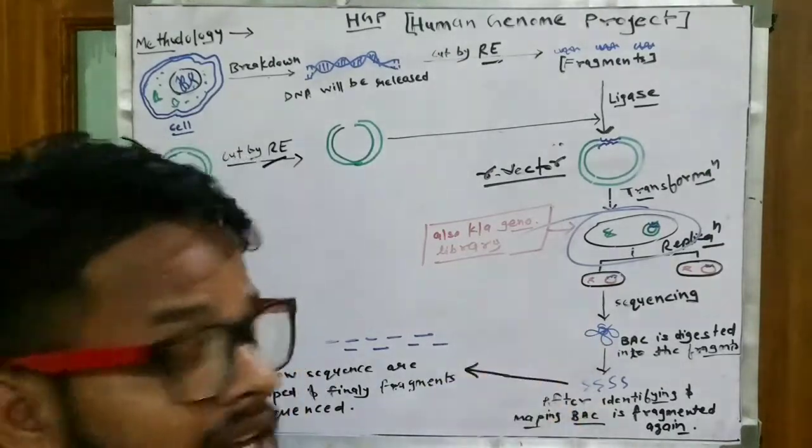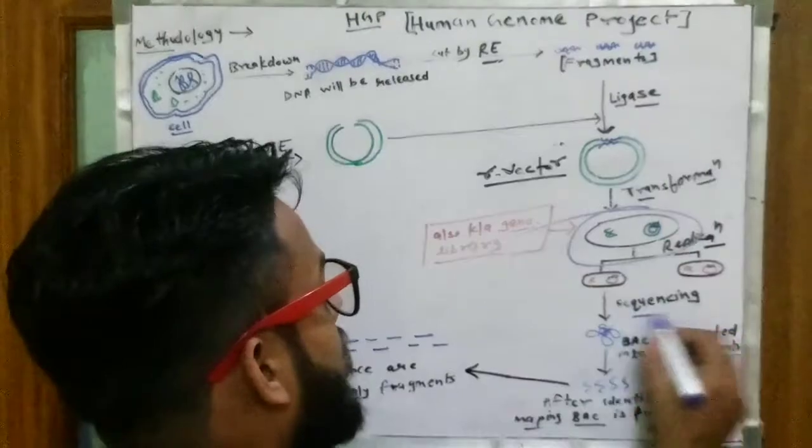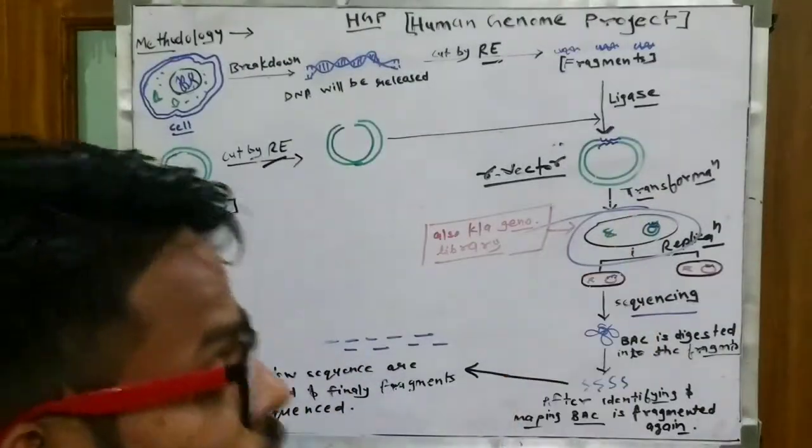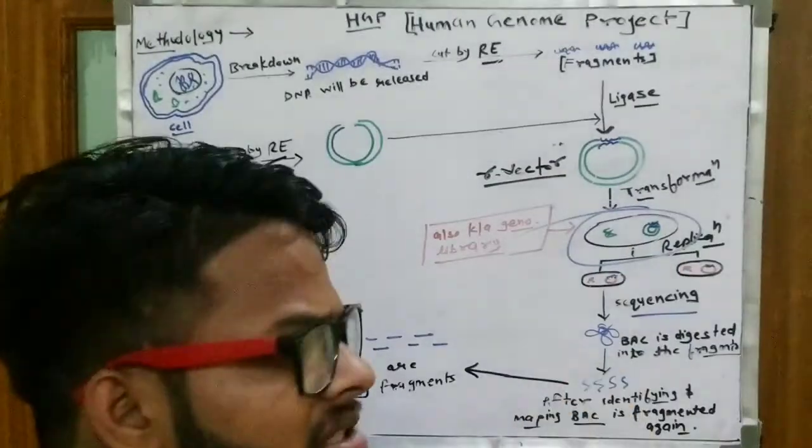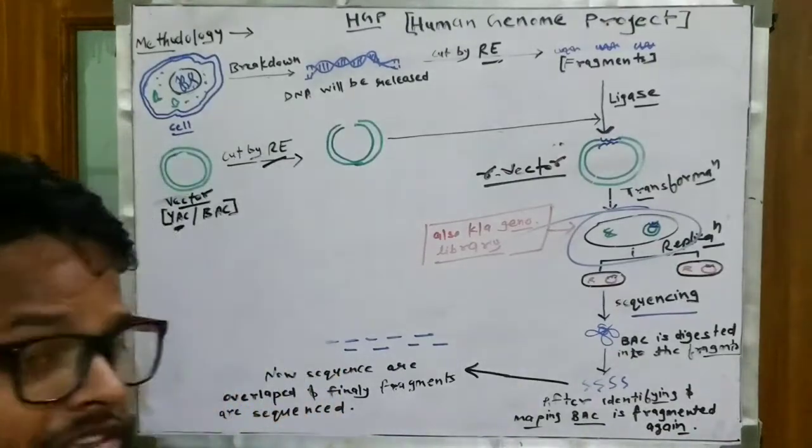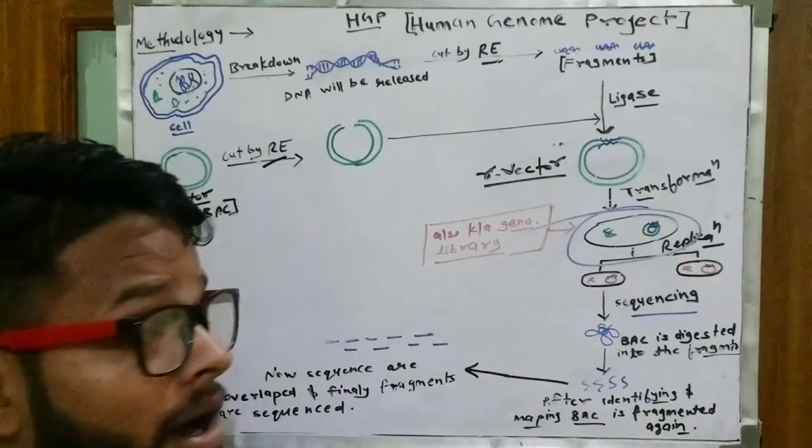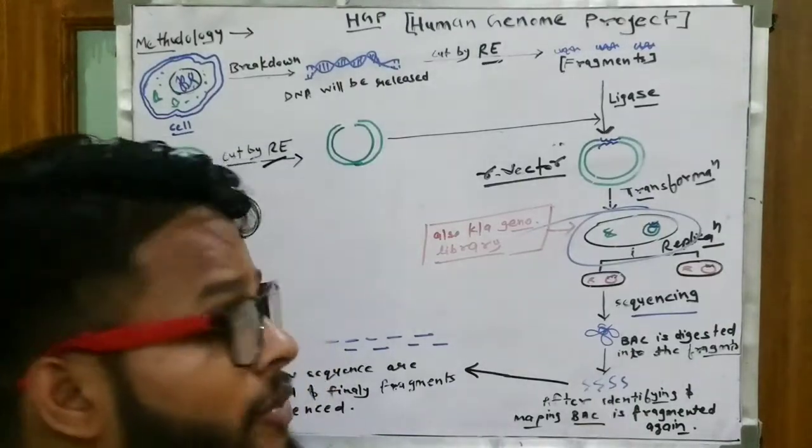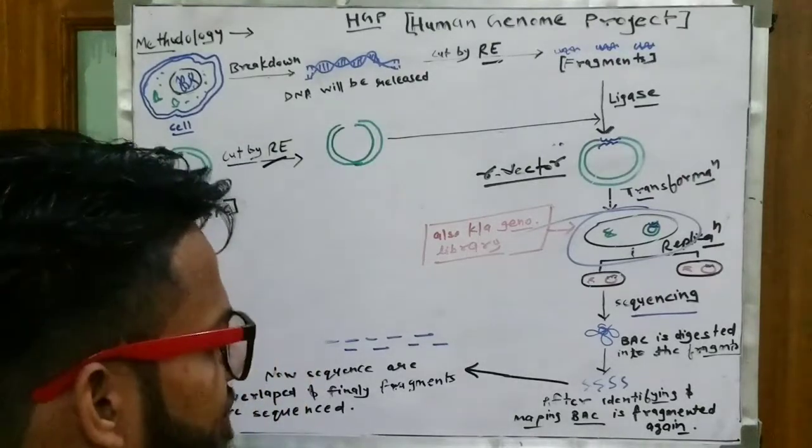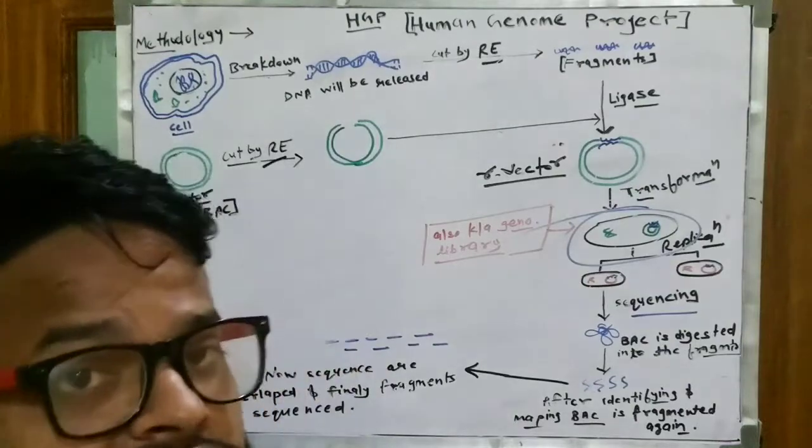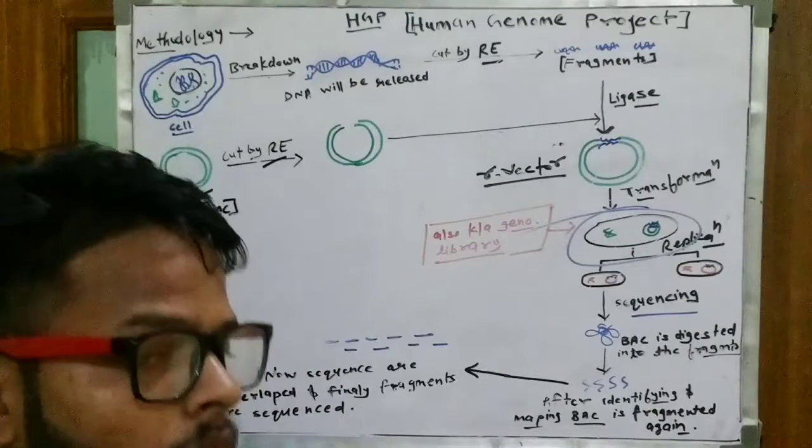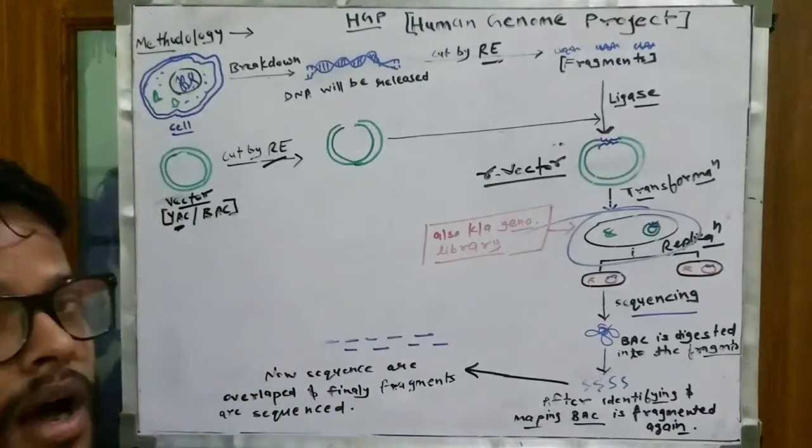After cloning, when we have a lot of amount, our desired gene will come. Then what will we do? We will do sequencing. Our bacterial artificial chromosome is recombinant. We have to identify mapping. After identifying the particular location, then in fragments, digest again into small pieces. Then when small pieces, then we can sequence our fragments.